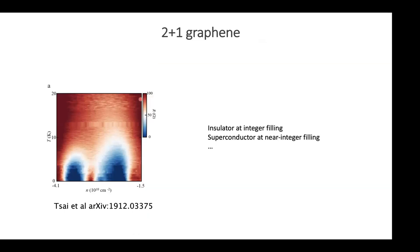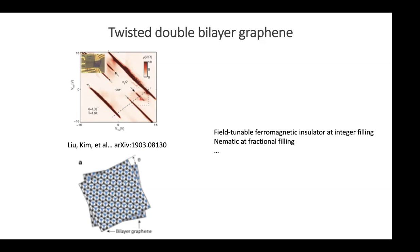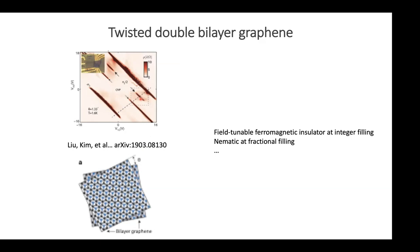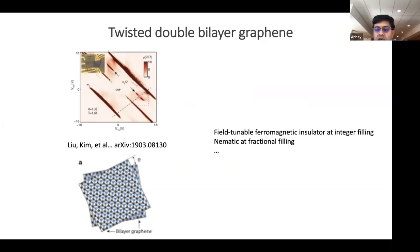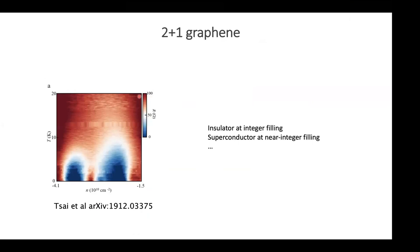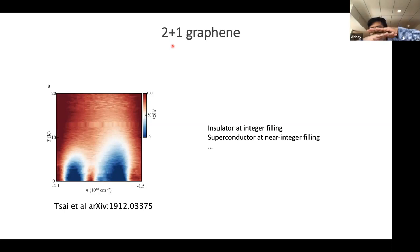What is the microscopic evidence for ferromagnetism in these systems? It's all from transport — they measure a gap that looks insulating in transport, apply a magnetic field, and the gap gets bigger. There's also so-called two-plus-one graphene: bilayer graphene twisted relative to monolayer graphene, which shows an insulator at integer filling and what appears to be a superconductor near integer filling, though that's somewhat debated.